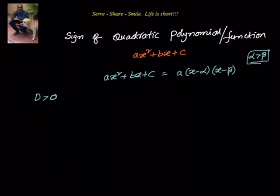In this case, both the roots are real and unique. When discriminant equals zero, both roots alpha and beta are equal. And when discriminant is less than zero, there are no real roots. Now let us take the first scenario.